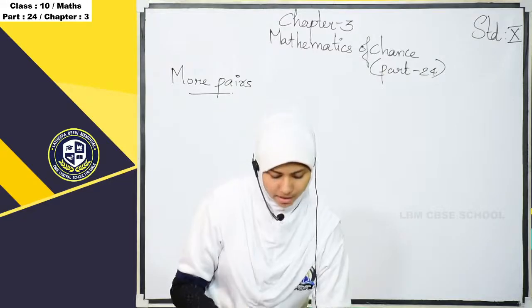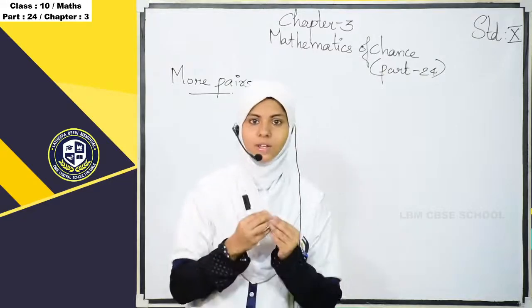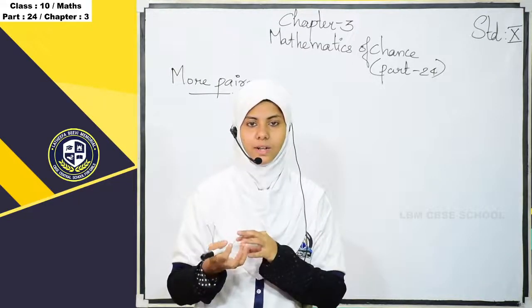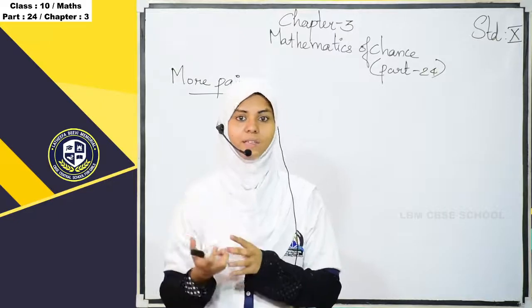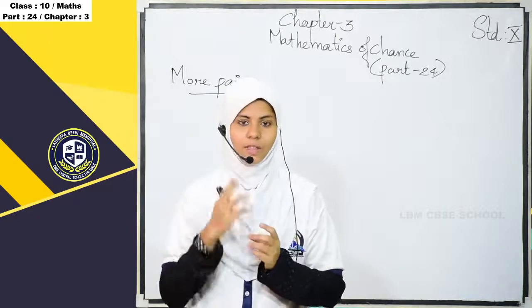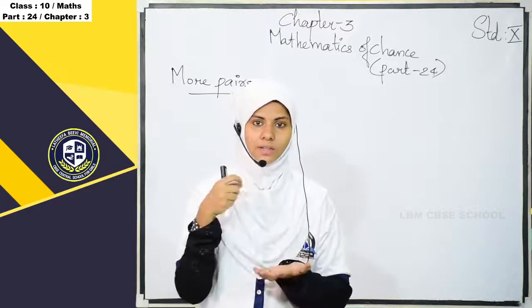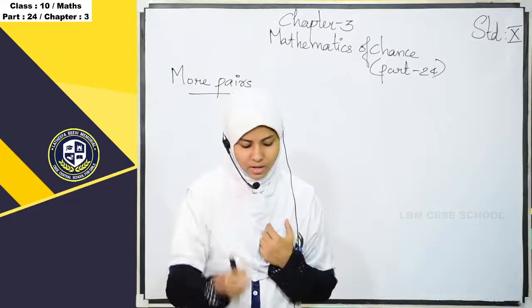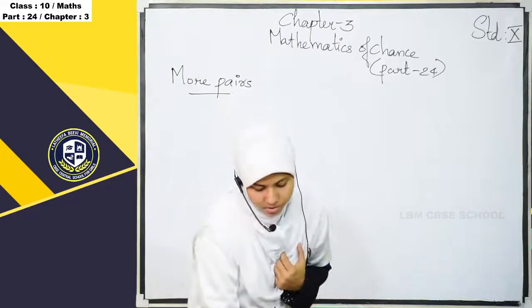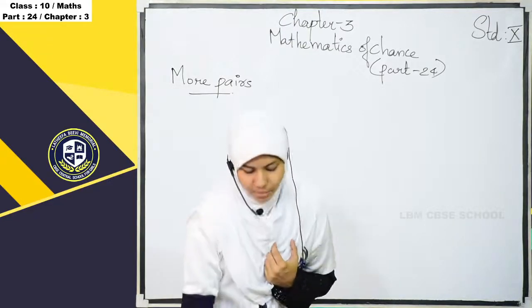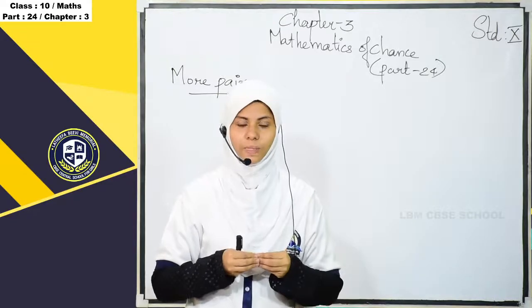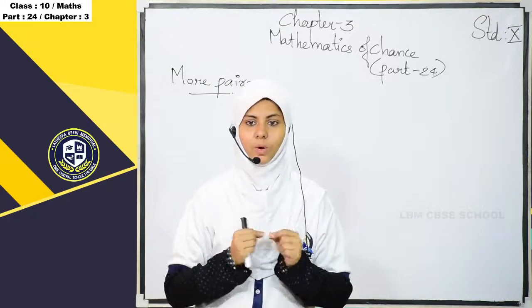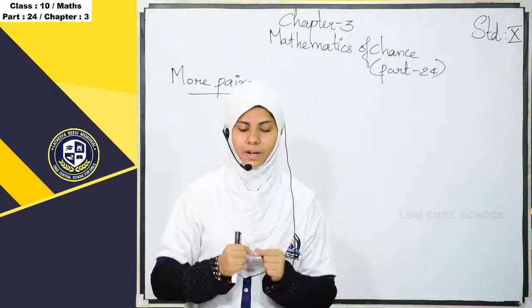Two boxes are there. One box contains 10 slips and the other box contains 5 slips. We have to take one slip from each box, and the question is: what is the probability of both being odd? So at the same time we have to take one slip from each box.